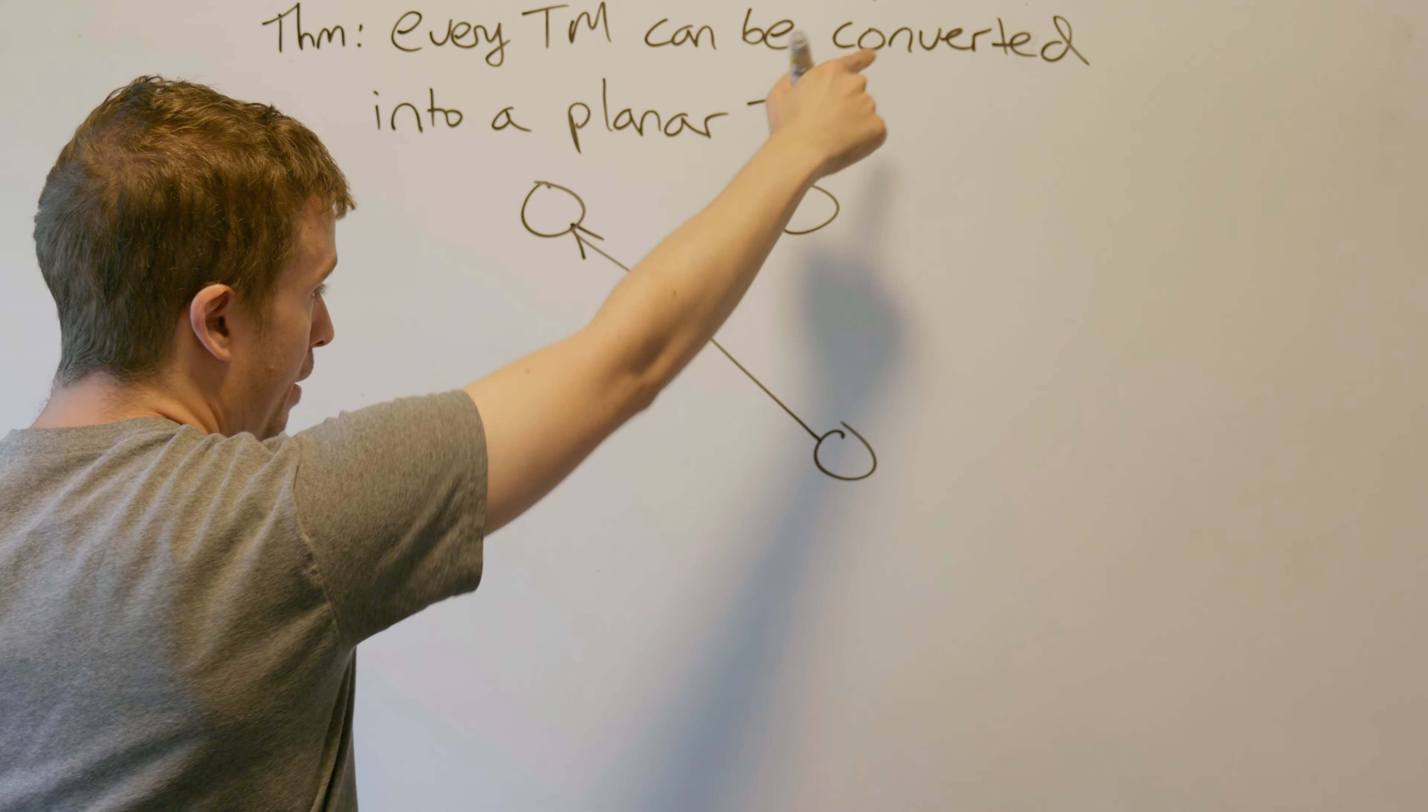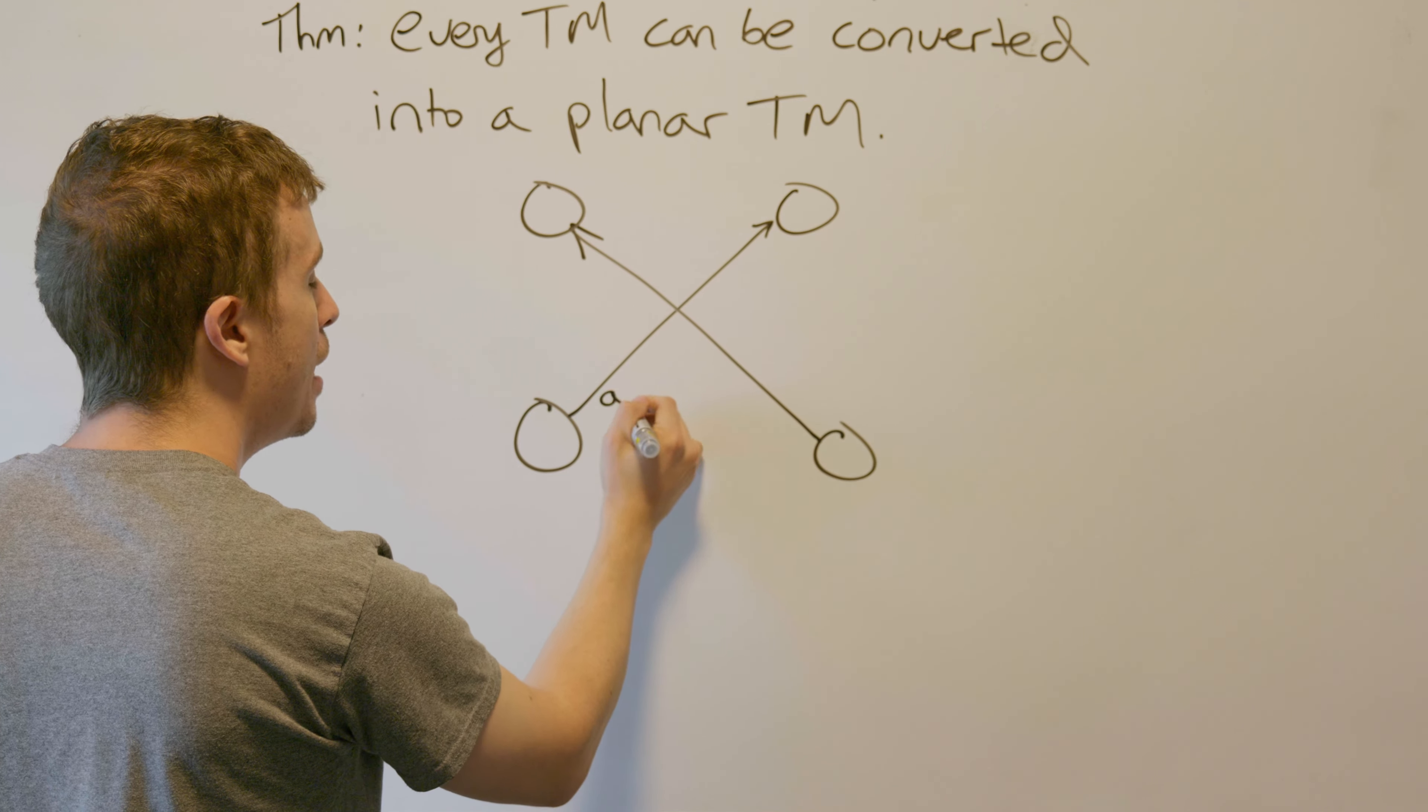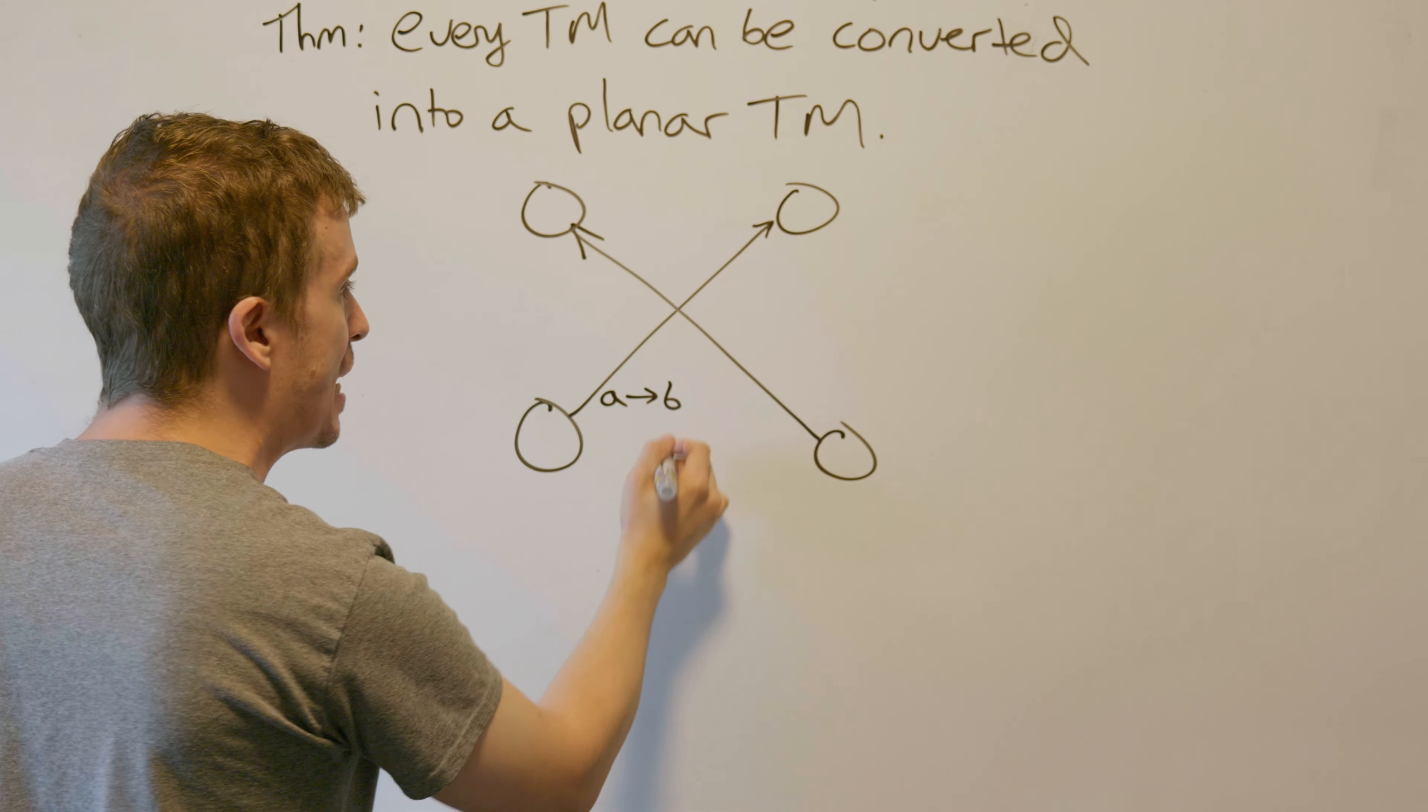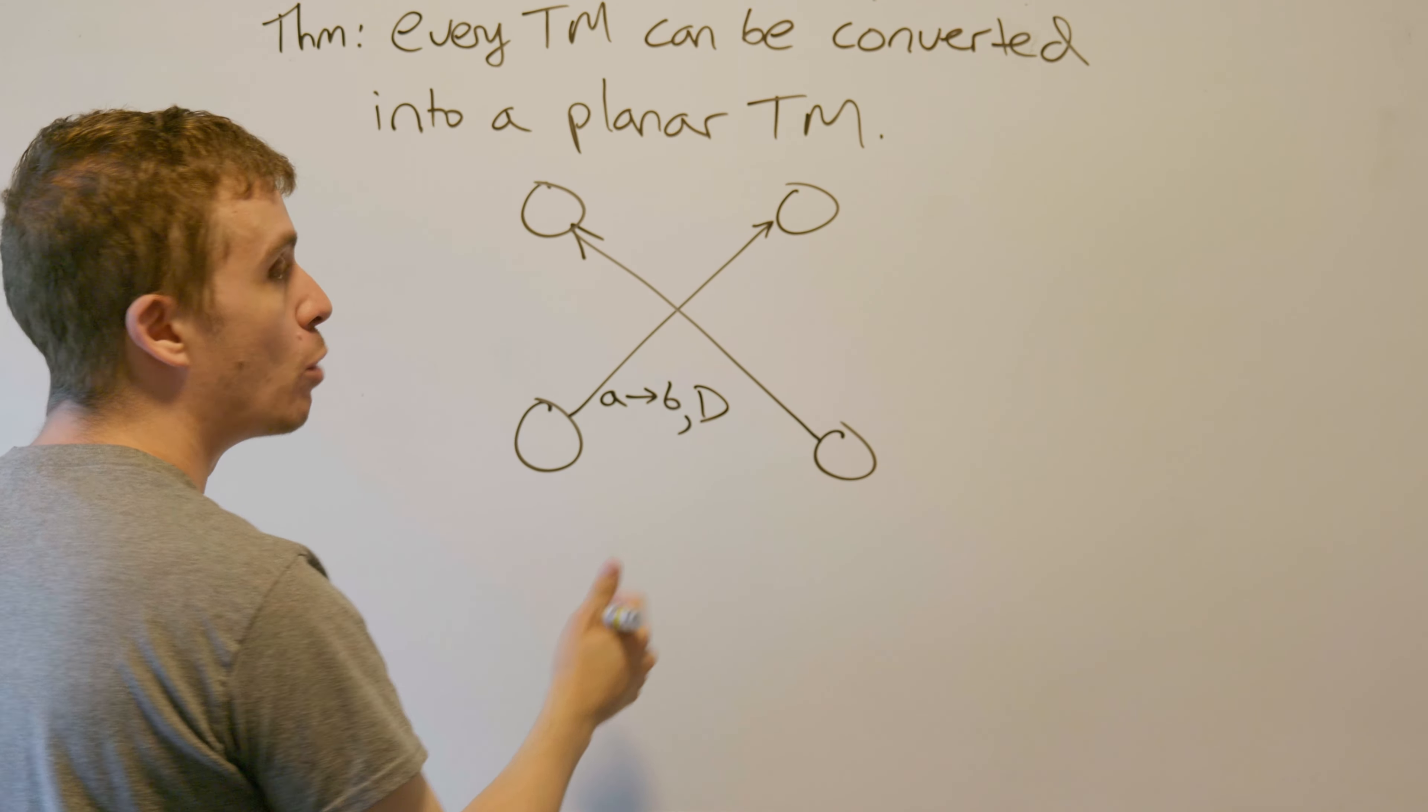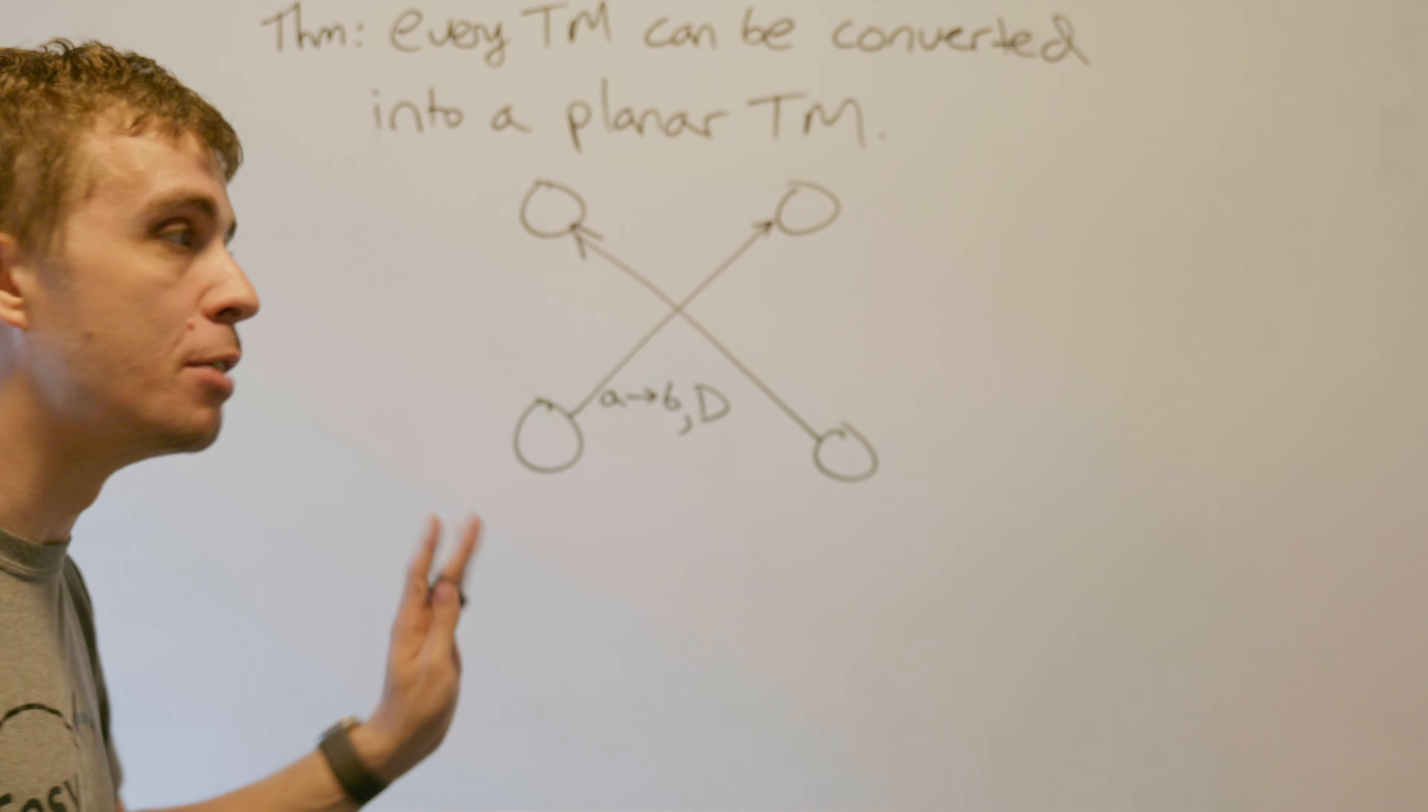Let's say that the going right transition here is going to read an A, change it to a B, and move in some direction D. I don't know whether that's left or right, it doesn't matter.